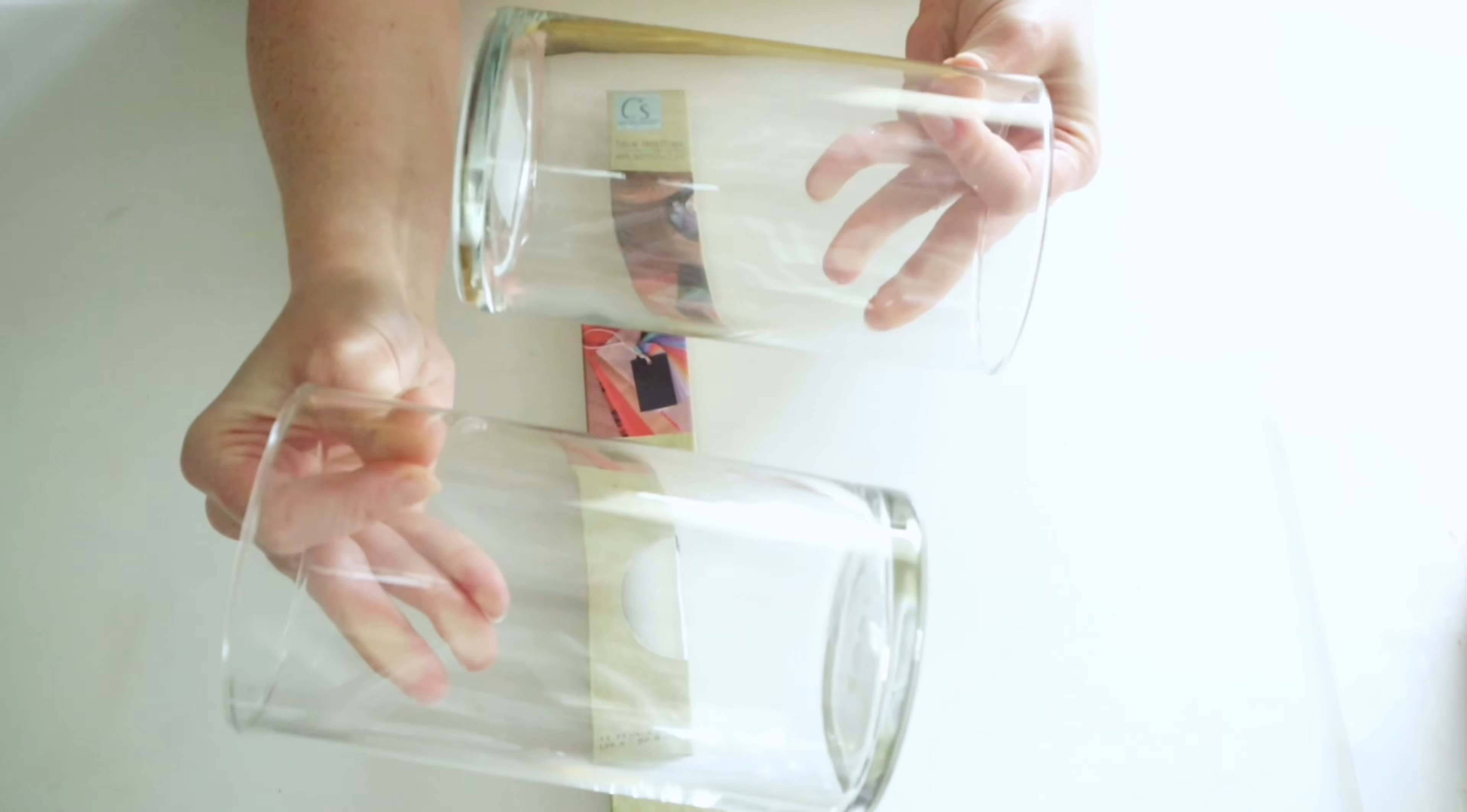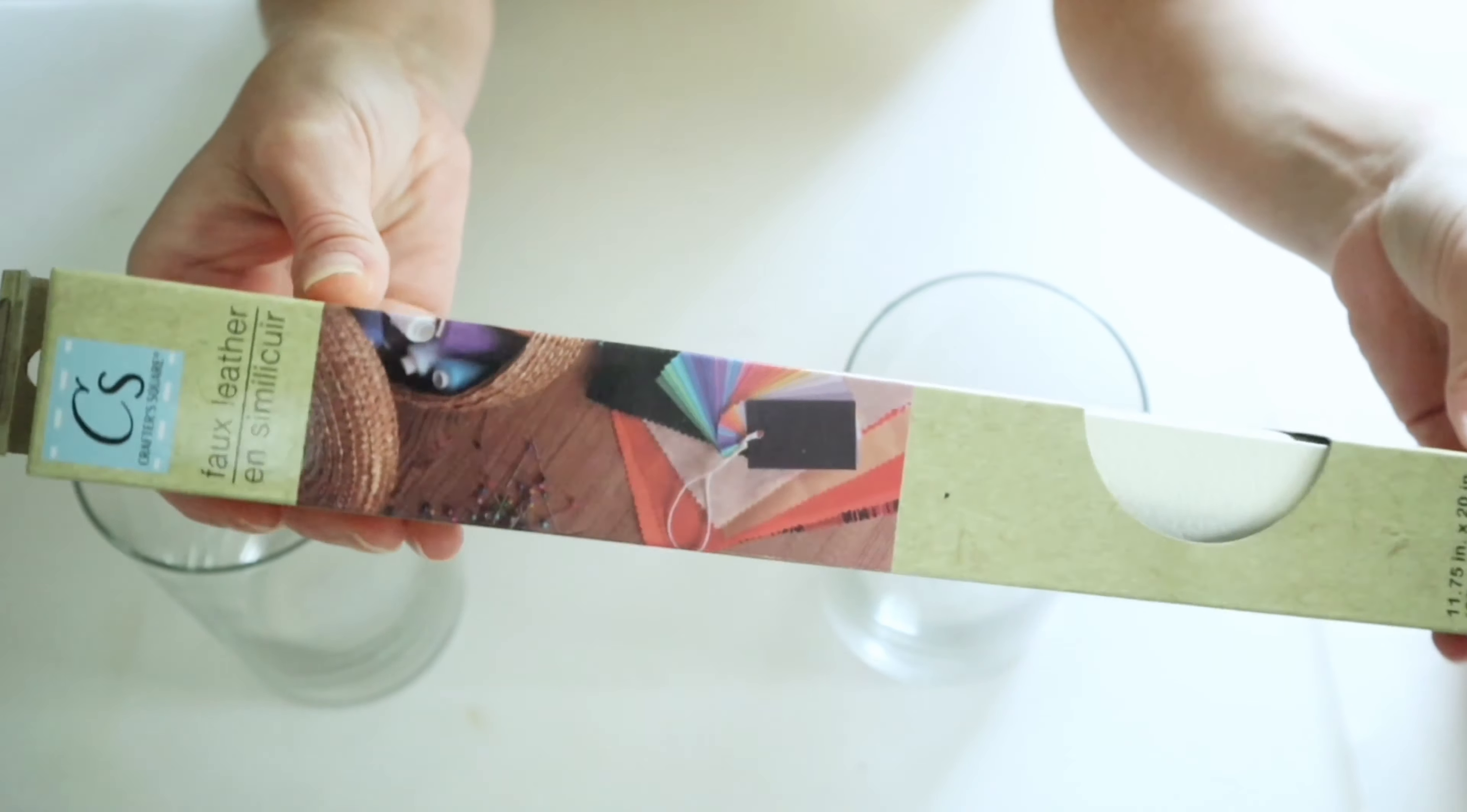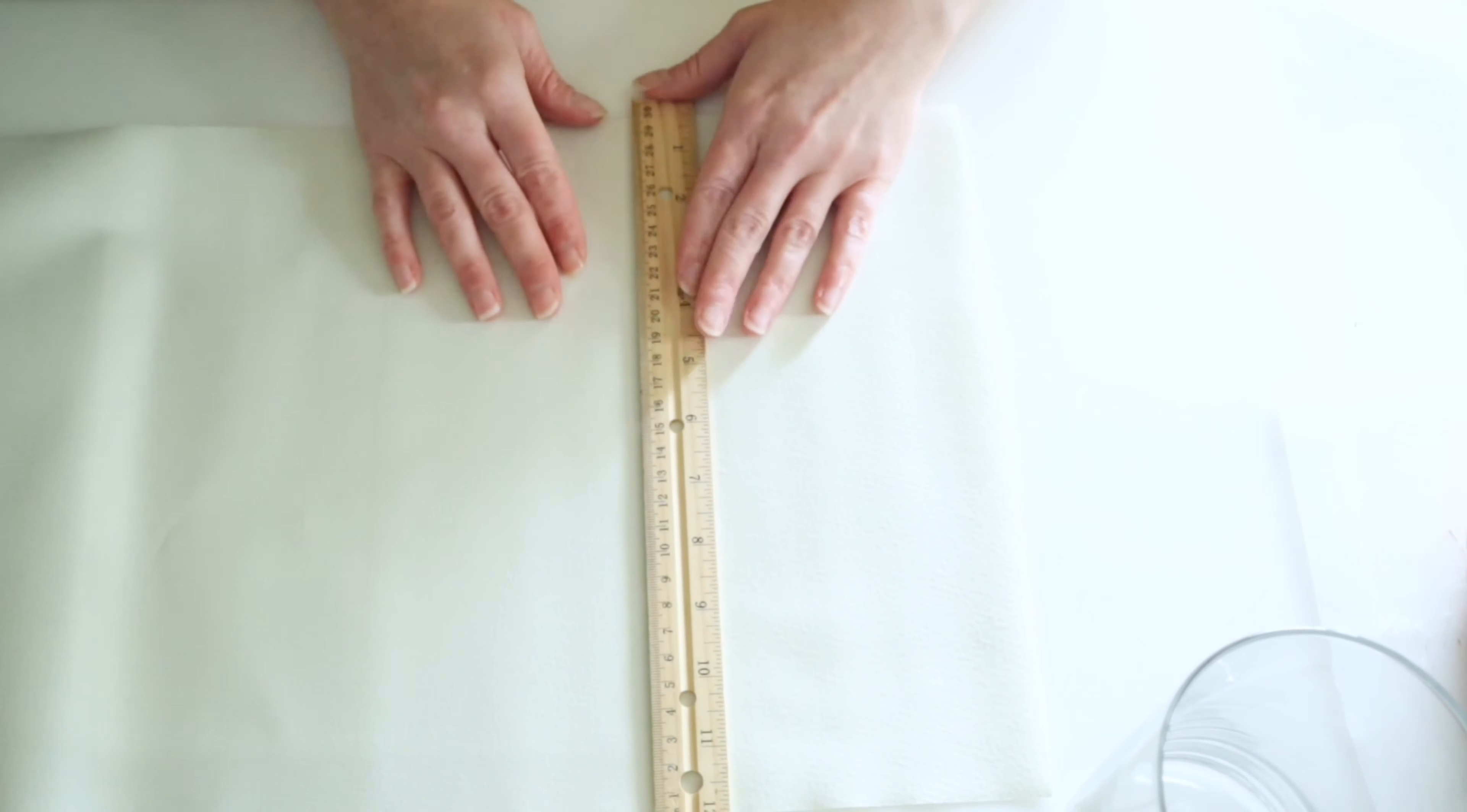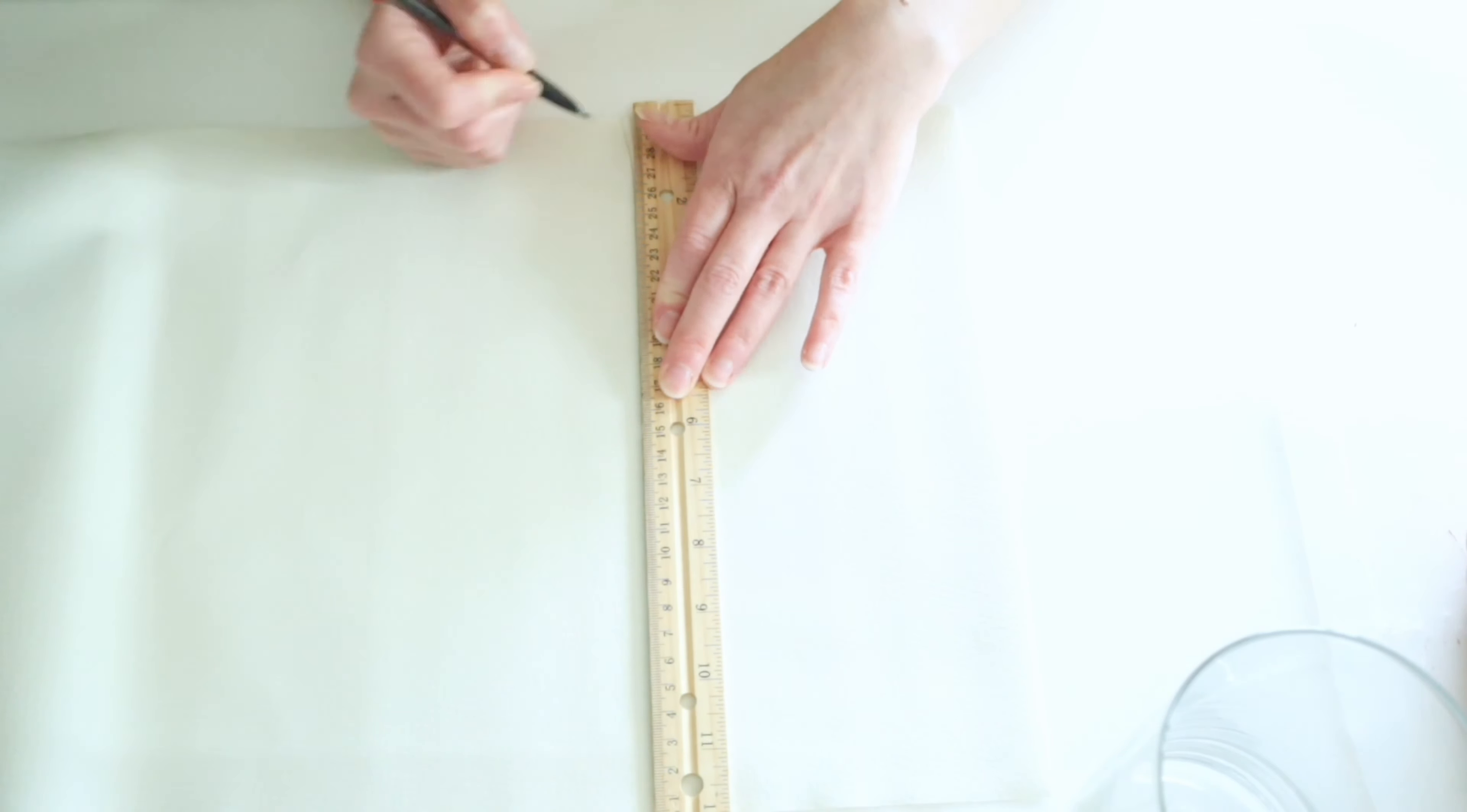For this next project, you're going to grab two of these hurricane vases from Dollar Tree as well as some of this white faux leather that they have in the stores now and you're just going to go ahead and cut down two pieces that will fit nicely around your hurricane vases.